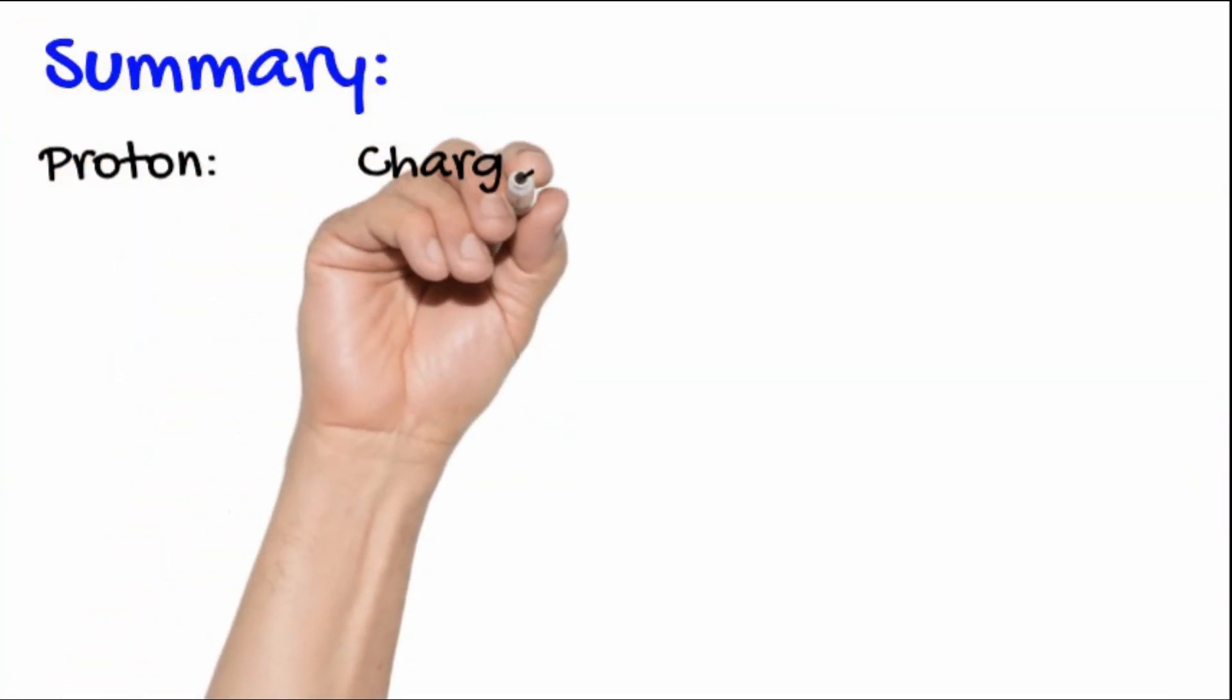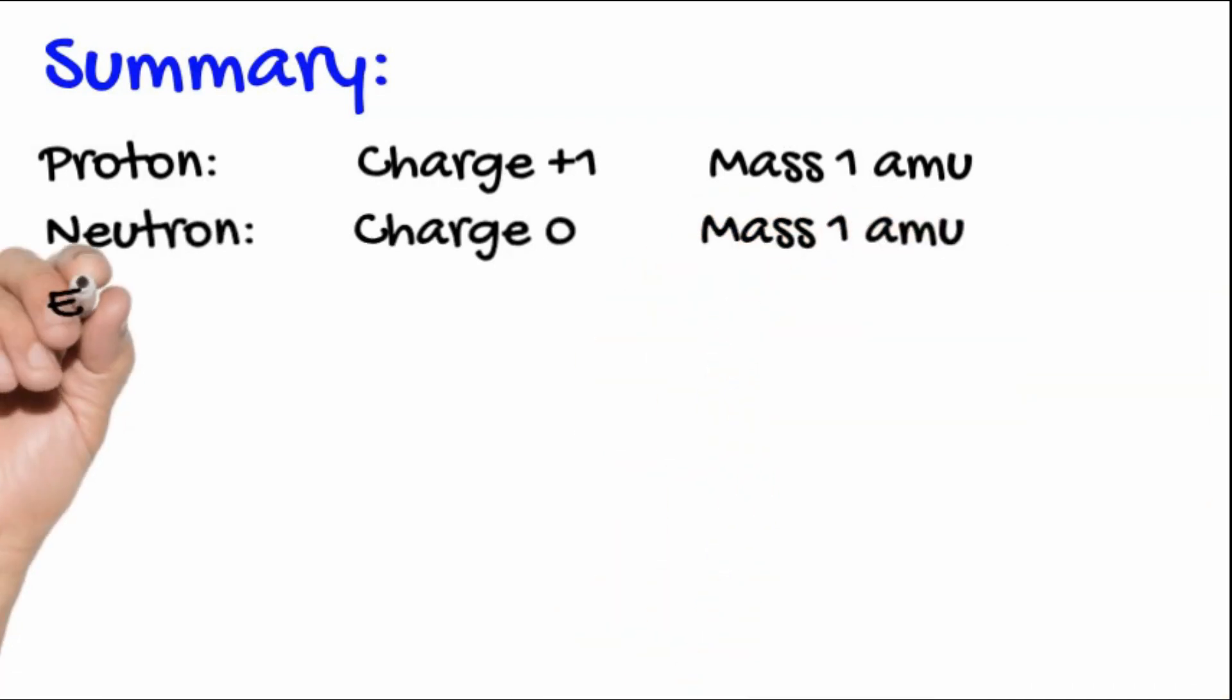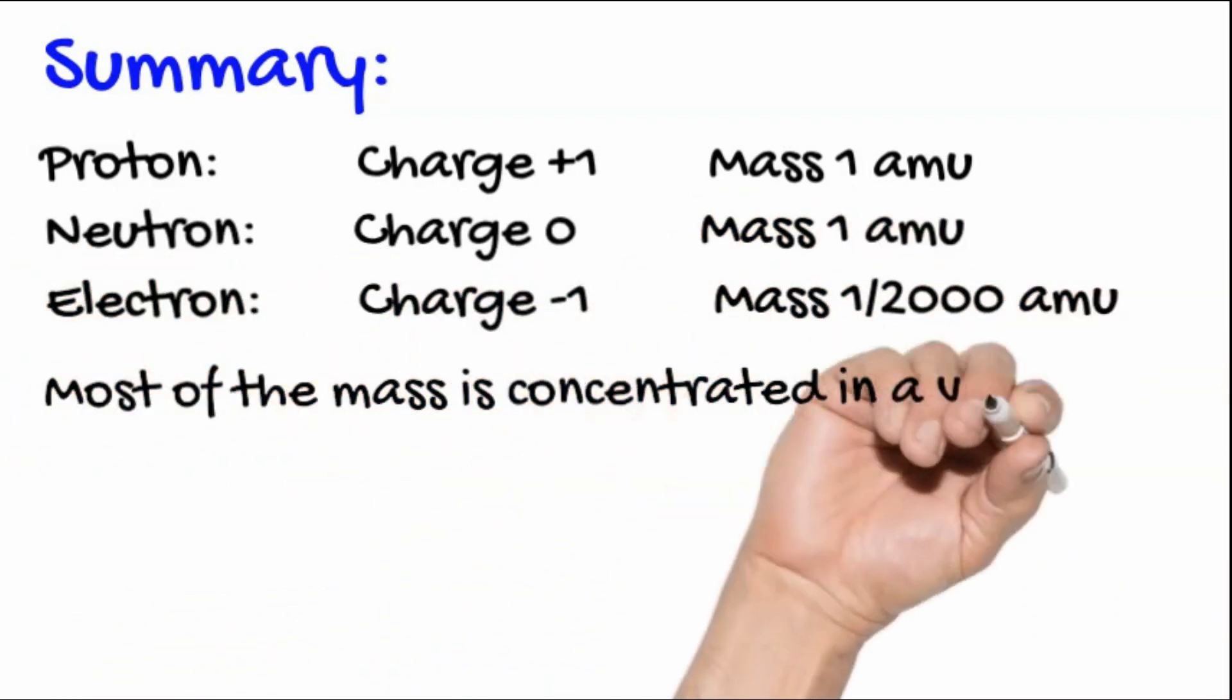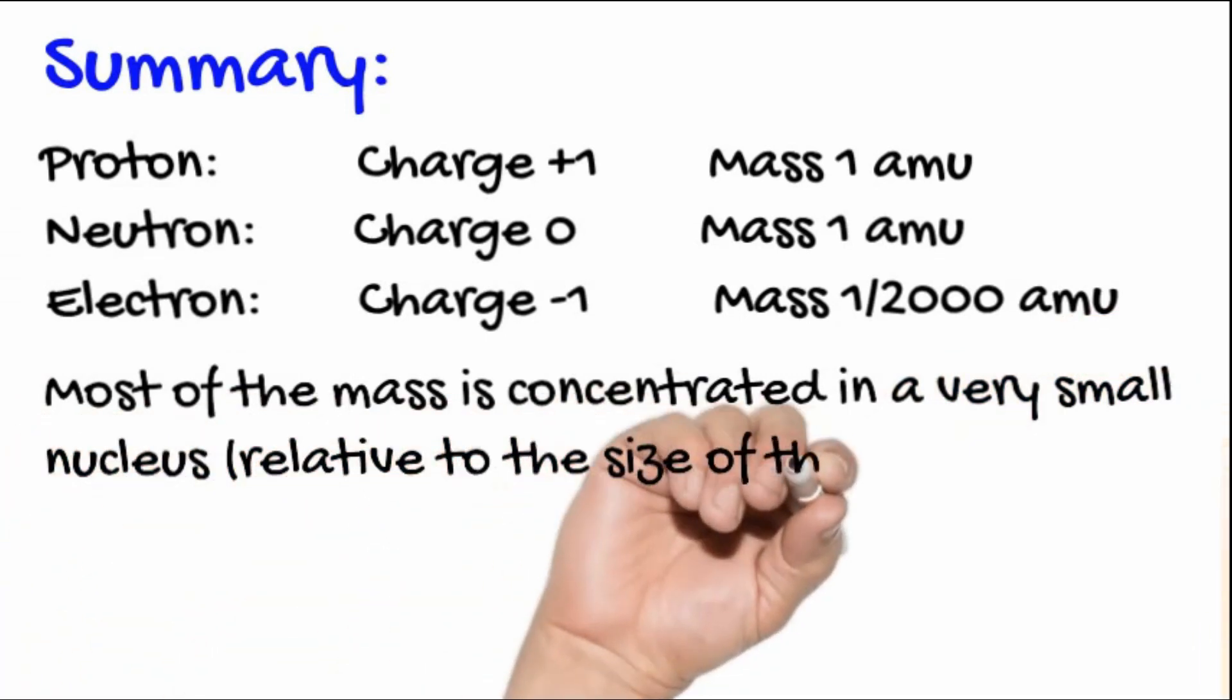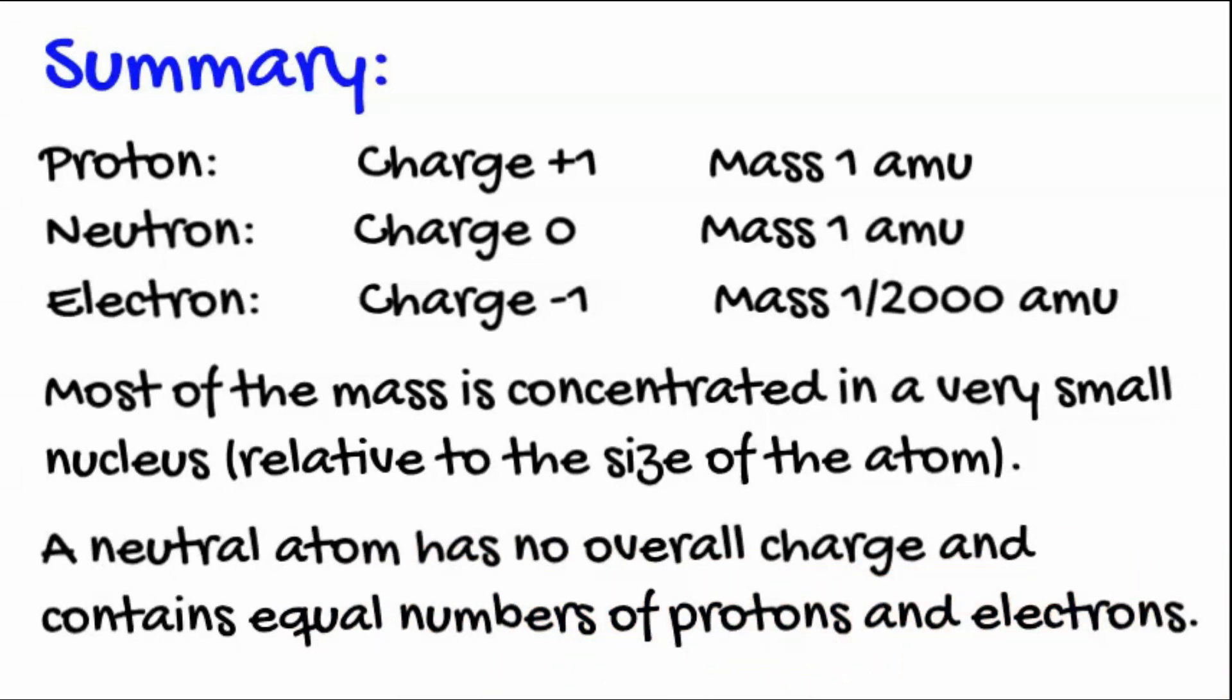In summary, the nucleus consists of protons and neutrons. The proton has a charge of plus one, the neutron zero charge. Both have a mass of one. Electrons have a charge of minus one and a mass of approximately one two thousandth of an AMU. Most of the mass is concentrated in the nucleus, which is very small relative to the size of the atom. And a neutral atom contains the same number of electrons as it does protons.